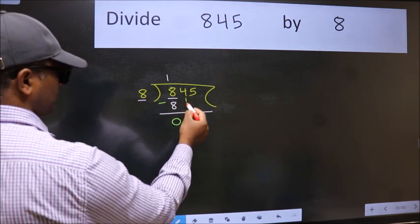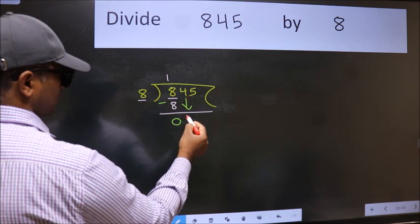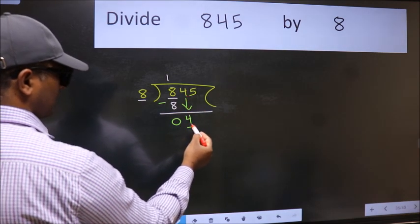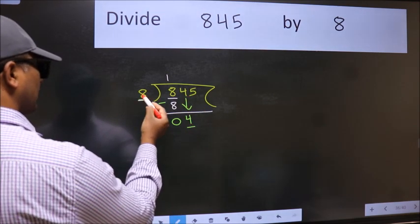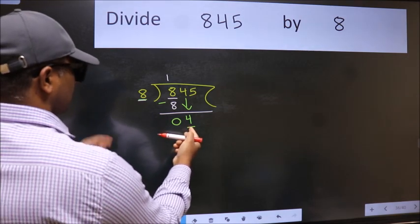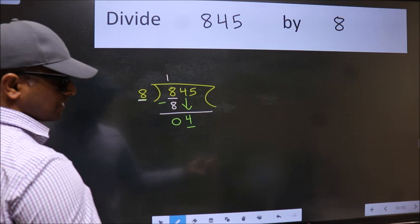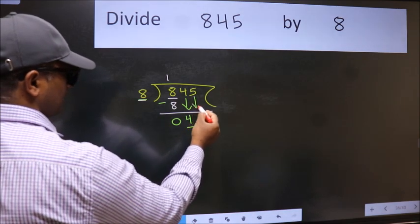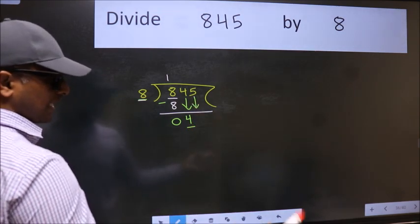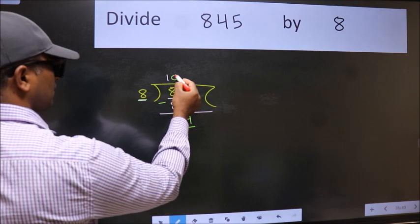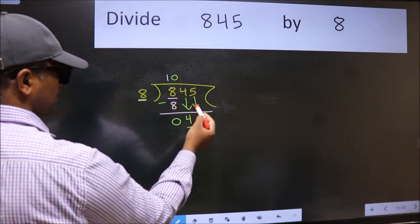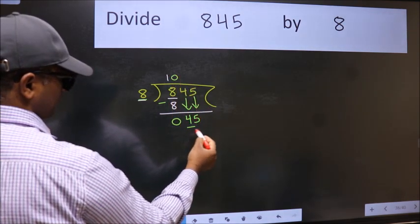After this, bring down the beside number. So 4 down. Now here we have 4 and here 8. 4 is smaller than 8, so we should bring down the second number. And the rule to bring down the second number is put 0 here. Then only we can bring this number down. So, 45.